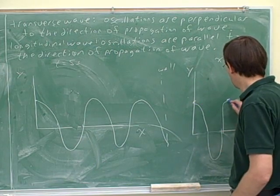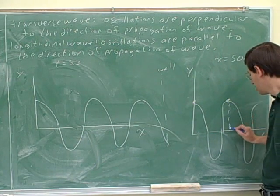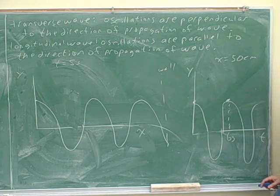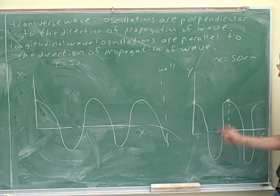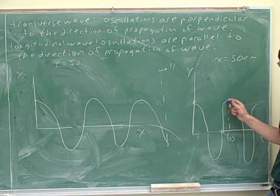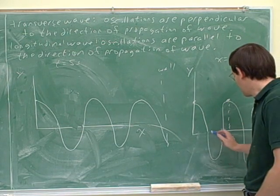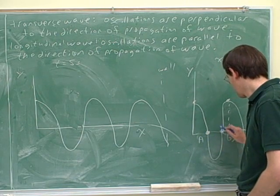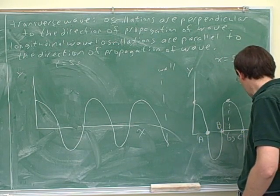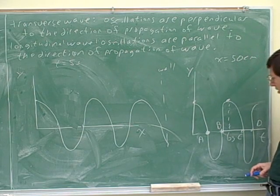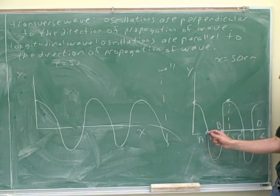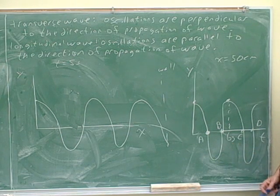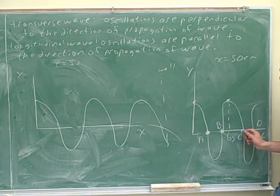So, for example, suppose that this point over here happened to be six seconds. Well, then we would know that if we started at crest, it takes us six seconds to get to another crest. And therefore, the period would be six seconds. Now, let's say that we were starting at this point, point A. What other point would we compare that to to find the period? Point C. Yeah, point C. That's good. So you avoided the trap.